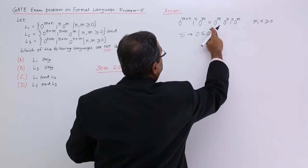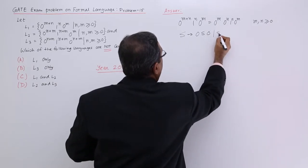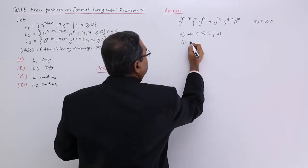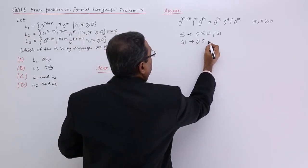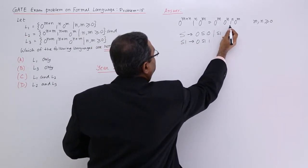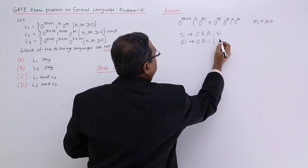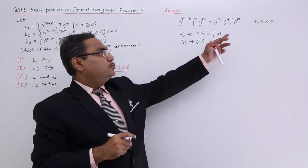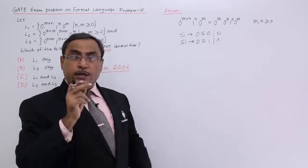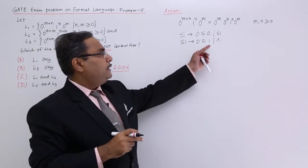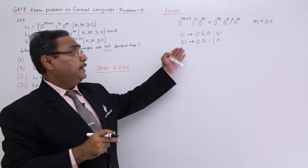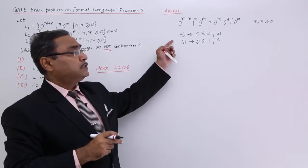That means it will produce this particular part or it will come to S1 and S1 will produce 0 S1 1. So it will produce this part or my epsilon. So in this way it will also have m and n greater than equal to 0. Here you see the production rules are something like the context free type.